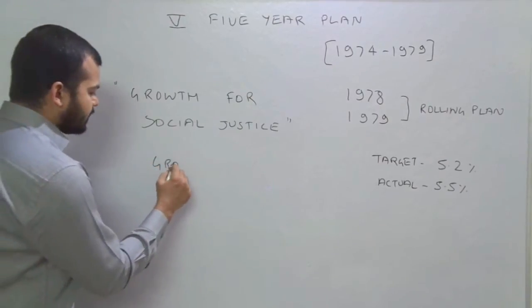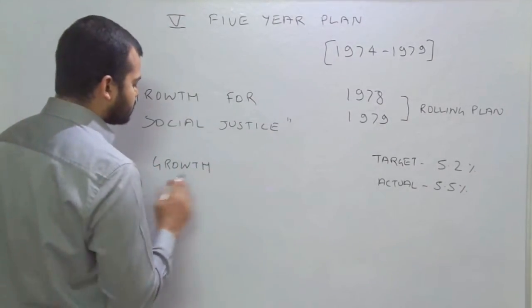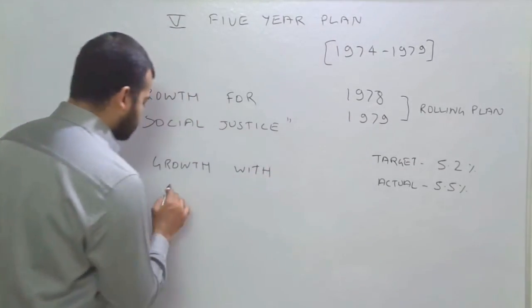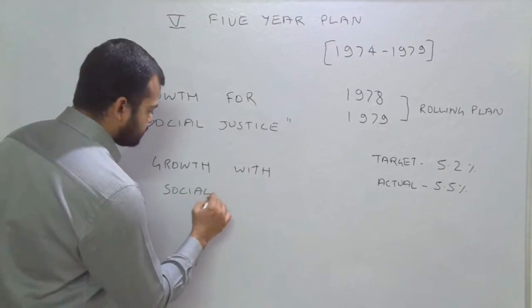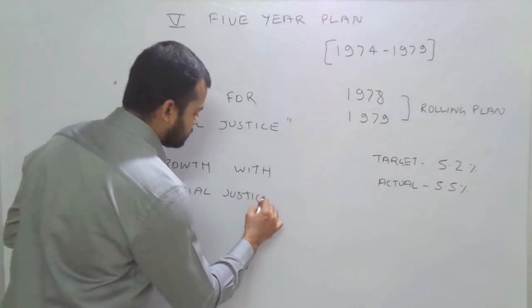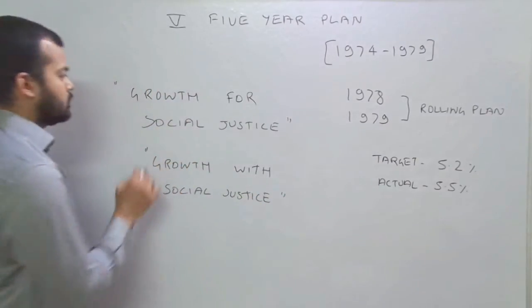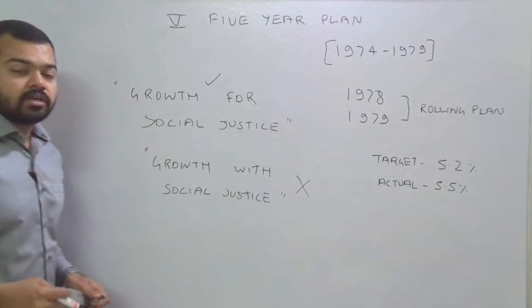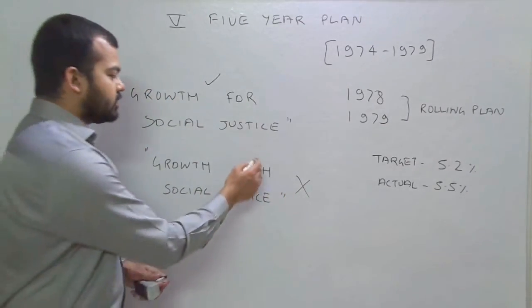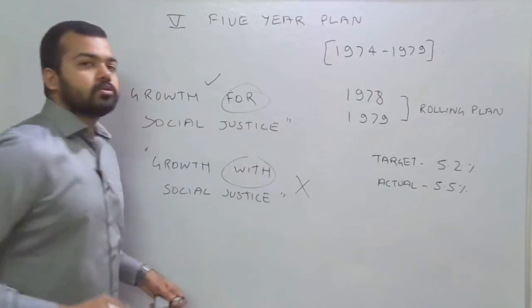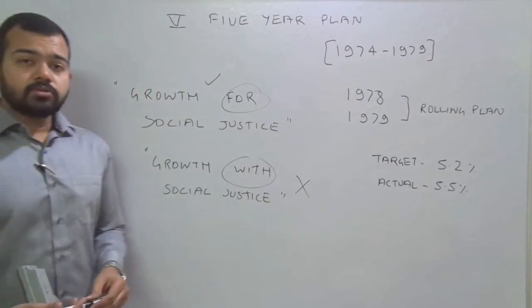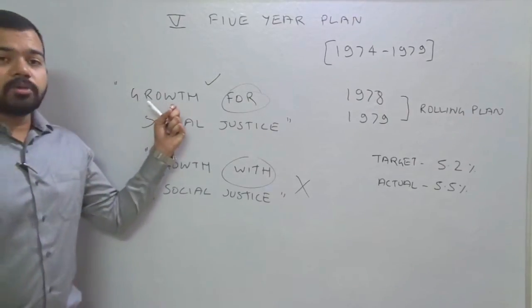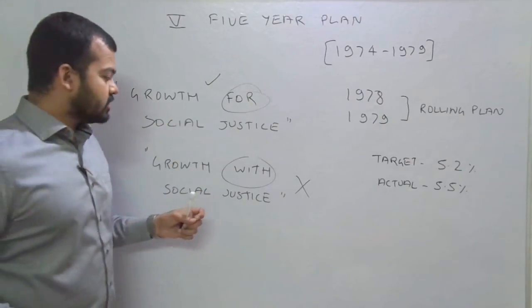Before this Five Year Plan, the policy makers believed in 'growth with social justice.' In this plan, 'growth for social justice' was adopted and 'growth with social justice' was rejected. There is a minor but important difference between the words 'with' and 'for' — the focus shifted to providing social justice alongside economic growth.